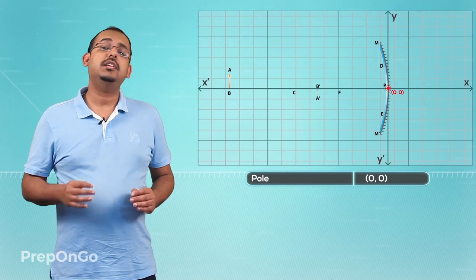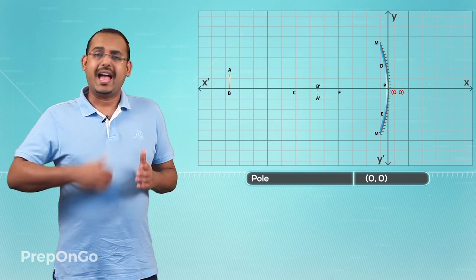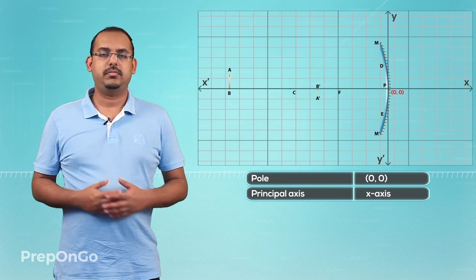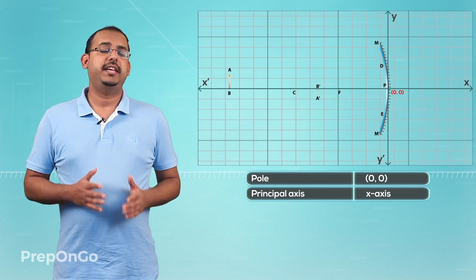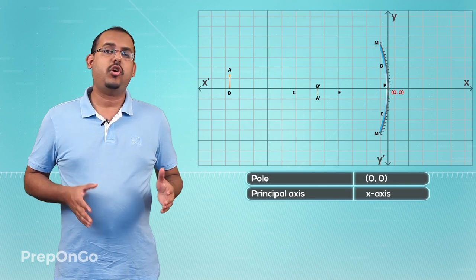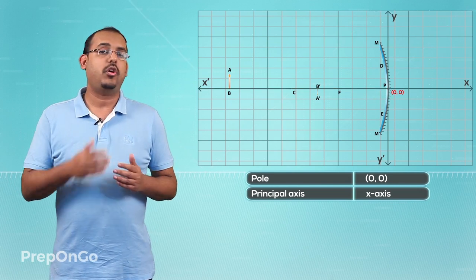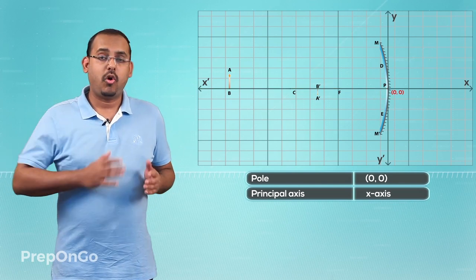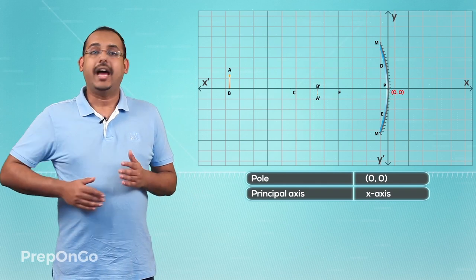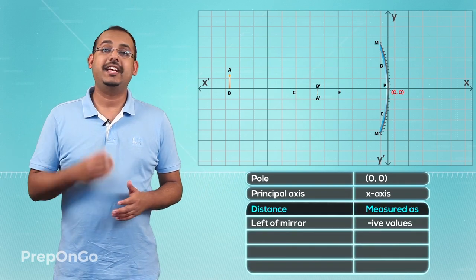As a result of this, the principal axis of the mirror coincides with the x axis of the Cartesian plane. The object is always placed on the left side of the mirror — that is, in the direction of the negative x axis. Since the pole of the mirror coincides with the origin, all the distances measured to the left of the mirror are in the direction of the negative x axis. That is why the distance of the object from the mirror is always measured in negative values.